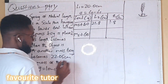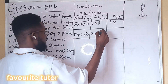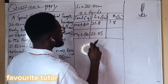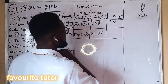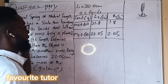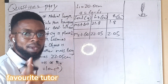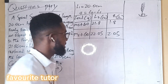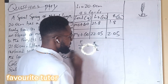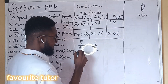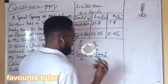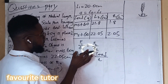The new length for the second case is 22.05 centimeters. The extension is 22.05 minus 20.0, which gives 2.05 centimeters. Now, remember this equation: F1 over E1 equals F2 over E2 — that is, load over extension equals load over extension.